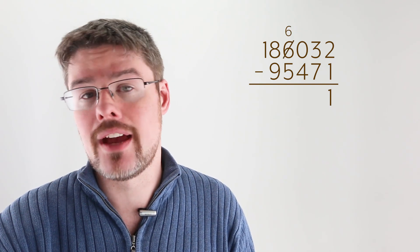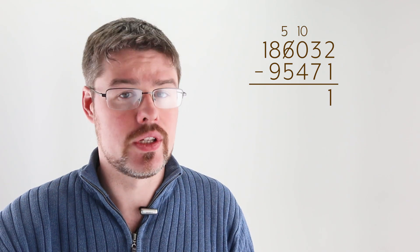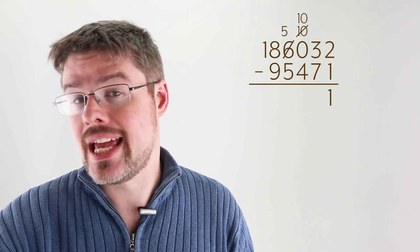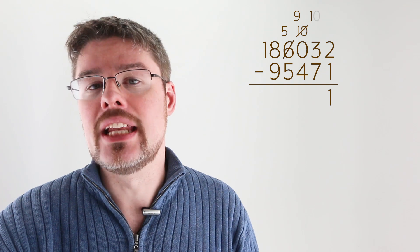We're going to take one of the six thousands we have here, break it up into ten hundreds, and then we're going to take one of those ten hundreds and break it up into ten tens. This will give us thirteen tens. So when we take seven away from thirteen, we're left with six tens.